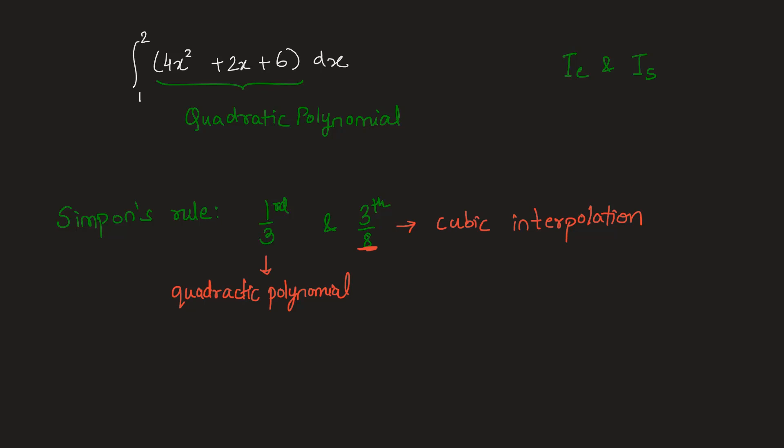So any of the Simpson's rules, if we use to estimate the value of this polynomial, is going to give you the exact value. Therefore, we know that I_E will be equal to I_S.